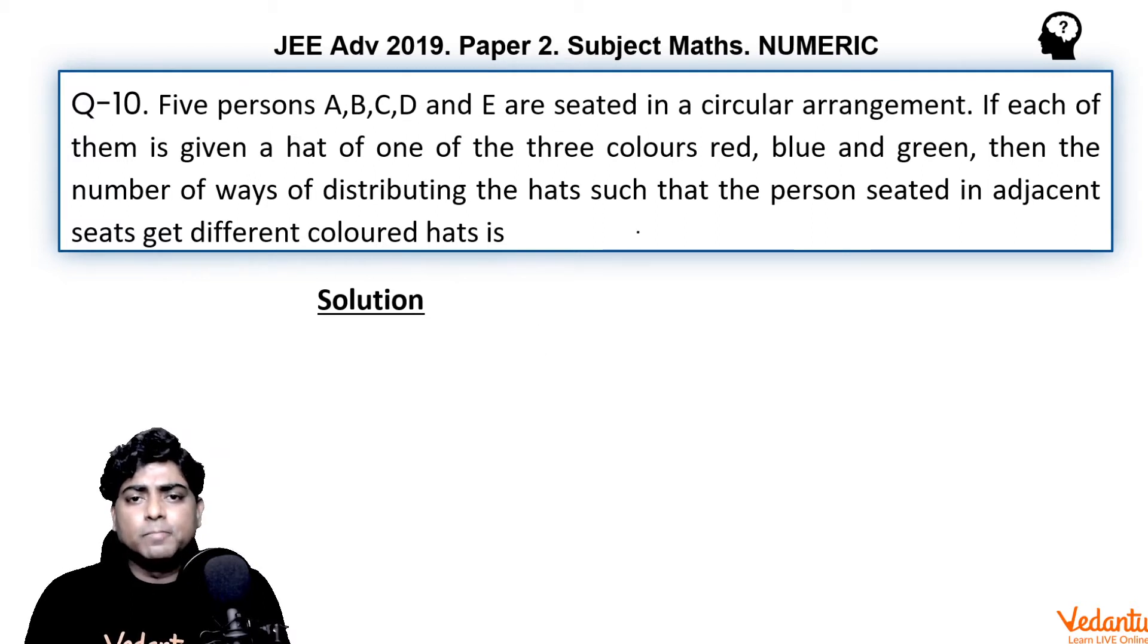See, there are five persons and three colors - red, blue, and green. Thinking about any particular color, how many times can it be used maximum? Red, suppose. Red can occur maximum twice because if it is used three times, suppose I'm giving red color hat to person A, then I'll have to give red to C.